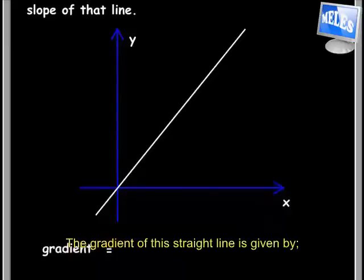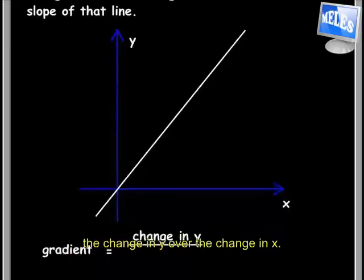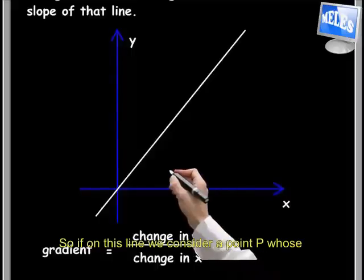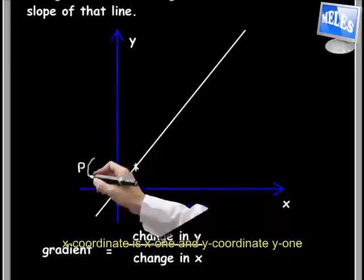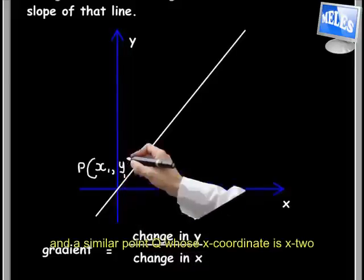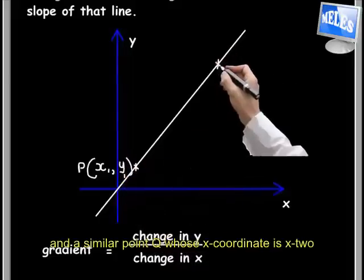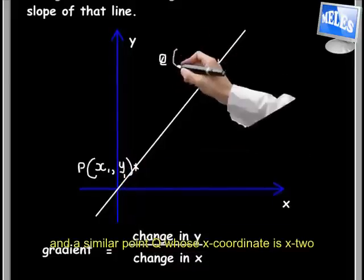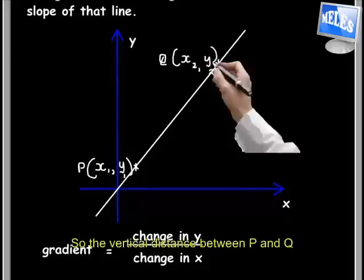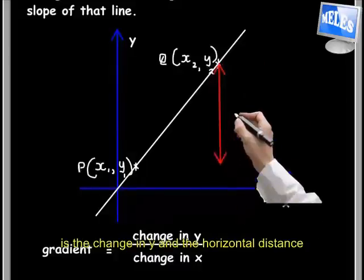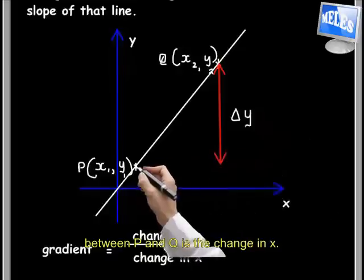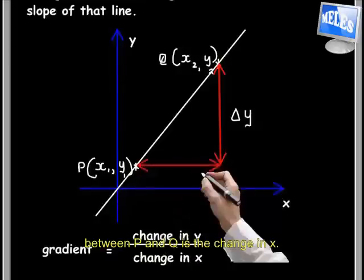The gradient of this straight line is given by change in y over the change in x. If on this line we consider point P, whose x-coordinate is x1 and y-coordinate is y1, and a similar point Q, whose x-coordinate is x2 and y-coordinate is y2, then the vertical distance between P and Q is the change in y, and the horizontal distance between P and Q is the change in x.